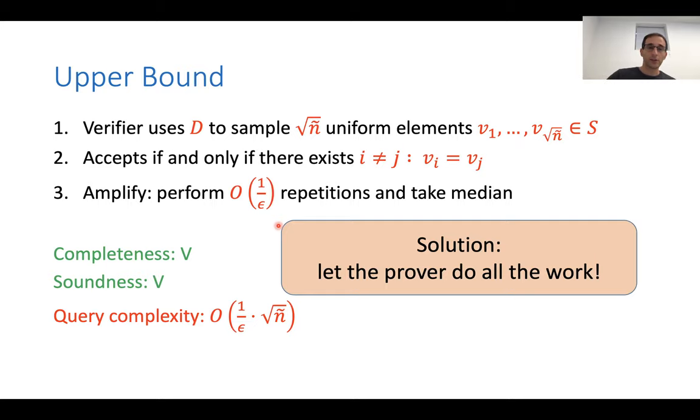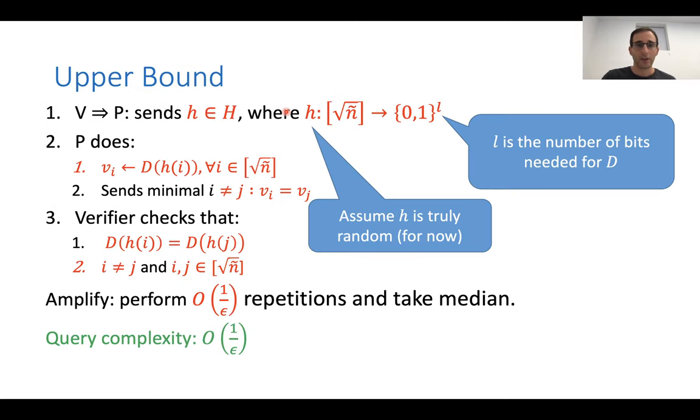So, the solution is we're going to take these things and we're going to delegate all the work to the prover. But again, in such a way that we can trust what he's doing. So, one thing we cannot do and we cannot let the prover claim that he sampled square root N elements. He's not gonna do that honestly. So, instead what we're gonna do is again, we're gonna sample a hash function H. And again, assume this is truly random. And this function H is gonna represent a huge amount of randomness that is gonna define how we sample the elements. So, the prover doesn't have, he cannot sample randomness himself. He has to use H.